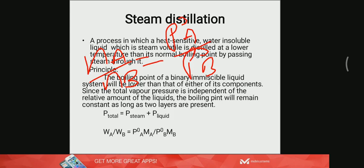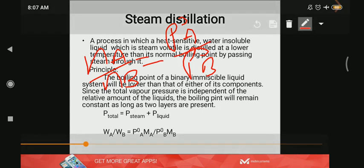This equation WA/WB = (P0A × MA)/(P0B × MB) is very useful. First, you can determine the relative amount of the two liquid vapors in the vapor phase or obtained in the distillate after distillation. Second, if you know WA, WB, P0A, and P0B (which are constants for a given temperature) and the molar mass of one liquid MA, you can calculate the molar mass of the other liquid MB.